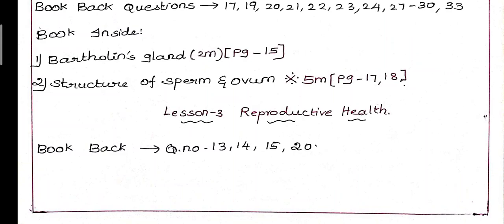Then the question is structure of sperm and ovum. So structure of sperm, spermatozoa and ovum, page number 17. The diagram is full, we can explain it. Next, structure of ovum. This is a 3 mark. Sometimes it is a 3 mark, page number 17 and 18. Mark it.